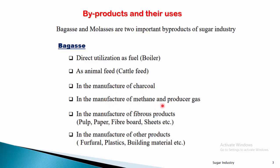Further, bagasse can be used in the manufacture of methane and producer gas. Producer gas, which consists of nitrogen among other components, can also be synthesized from bagasse. Additionally, bagasse is used in the manufacture of fibrous products such as pulp, paper industries, and fiberboards — boards and sheets can be manufactured with the help of bagasse.